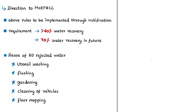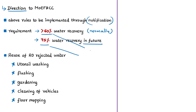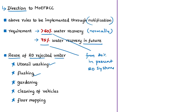NGT issued directions to the Ministry of Environment, Forest and Climate Change to prohibit RO use where TDS is less than 500 mg/L. Where RO is permitted, water recovery must be at least 60 percent, with provisions to achieve 75 percent in future. Currently only 20 percent of feed water is purified. NGT also ordered reuse of RO reject water for purposes such as washing utensils, flushing, gardening, cleaning vehicles, and floor mopping.